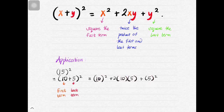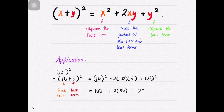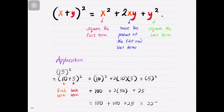Now let's simplify. The square of 10 becomes 100, plus 2 times the product of 10 and 5, which becomes 2 times 50, plus the square of 5, which is 25. Simplifying the middle term, we now have 100 + 100 + 25, which equals 225.